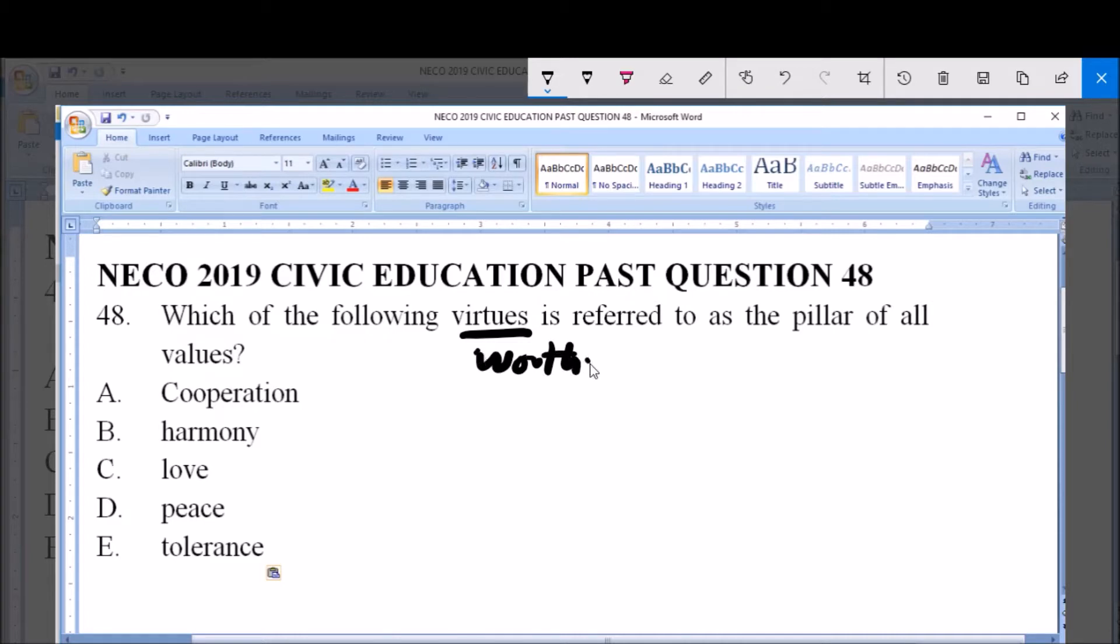Something that someone cherishes, that is virtue. So which of this is the plan, the foundation of values? The options are: A. Cooperation, B. Harmony, C. Love, D. Peace, E. Tolerance.